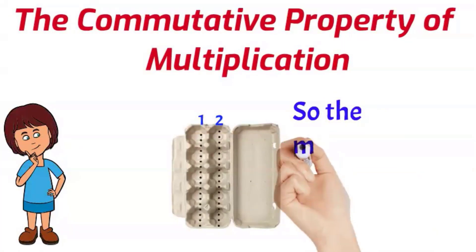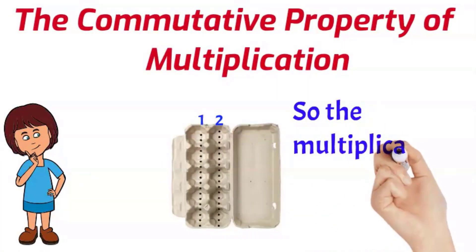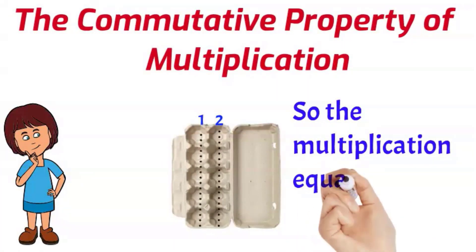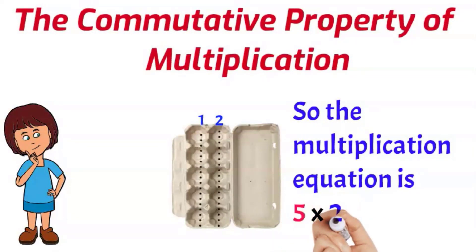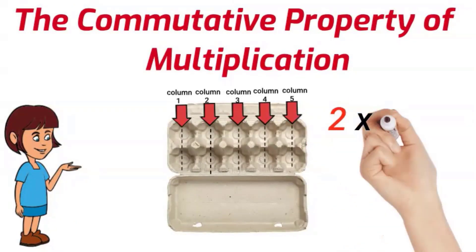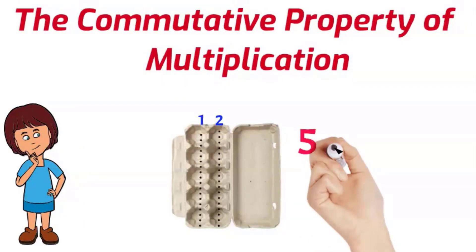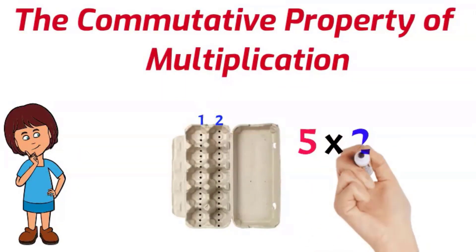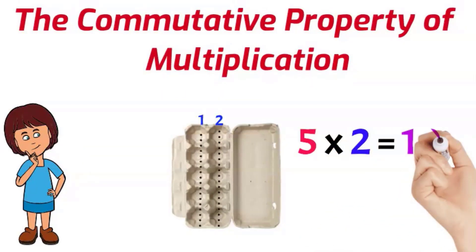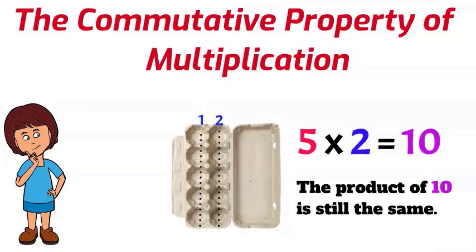Putting it all together in this orientation, the multiplication equation is five times two equals ten. Whether it's in landscape orientation — two times five equals ten — or in this orientation — five times two equals ten — either way the product of ten is still the same.